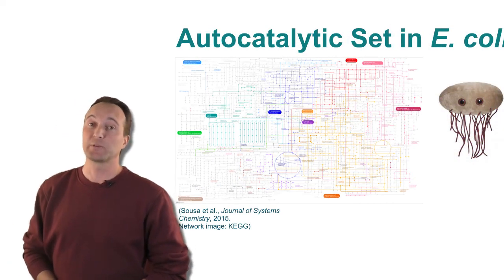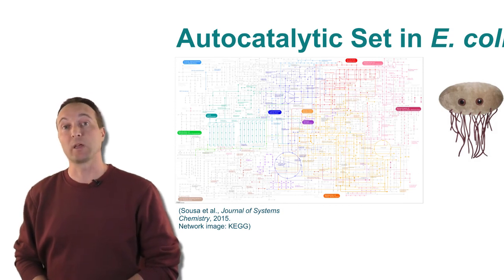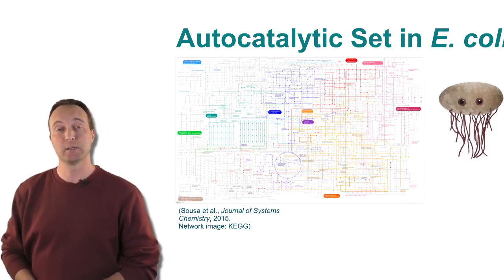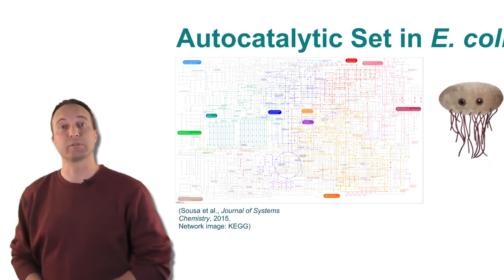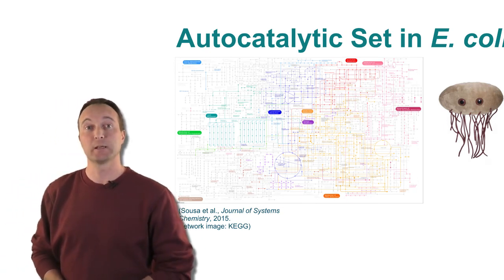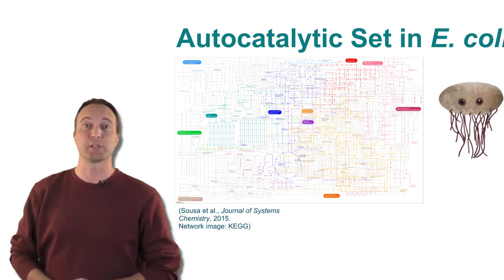Moreover, we have shown that the metabolic network of E. coli forms a large autocatalytic set. This supports the original claim that autocatalytic sets capture essential properties of living systems, in particular their catalytic closure and self-sustainability.